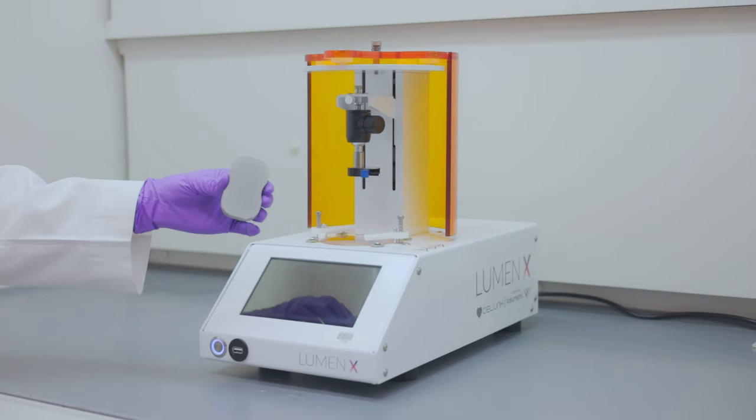To sterilize the build platform, soak it in 70% ethanol for 30 minutes and let it air dry.